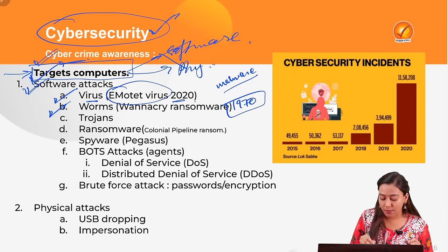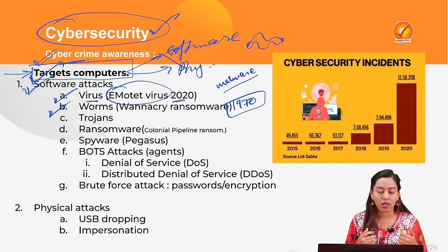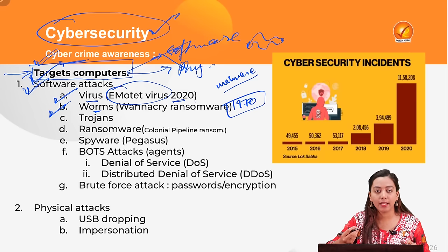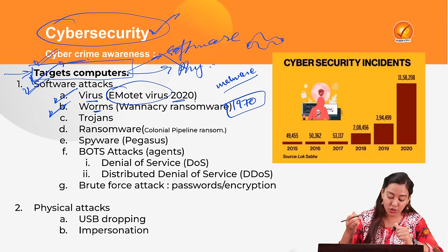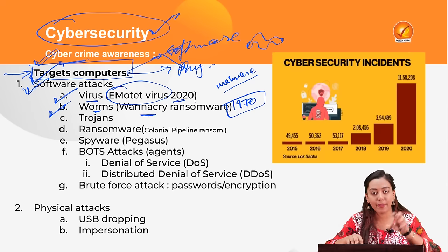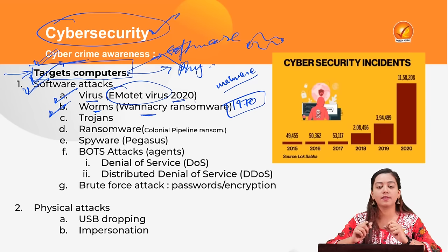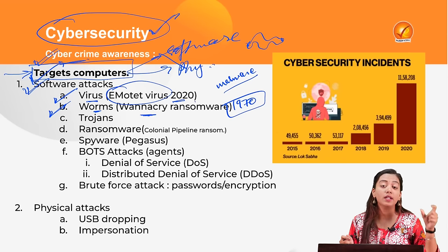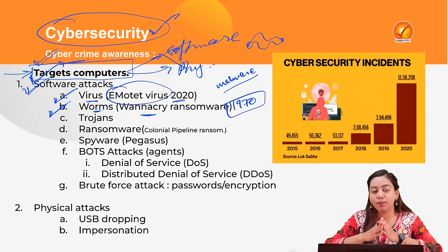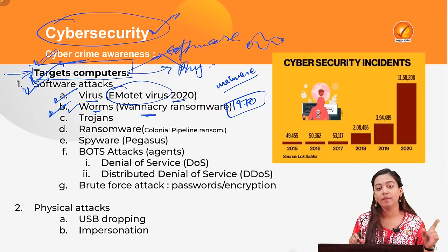A worm, like its biological counterpart, can survive on its own — it doesn't need to attach to another program. Worms are malwares which work without being attached to any program; they are self-replicating. They particularly attack system software such as Microsoft Windows or iOS, exploiting their vulnerabilities. Unlike viruses, they are self-living and self-breeding. One such worm is the WannaCry ransomware, which demanded ransom from victims.